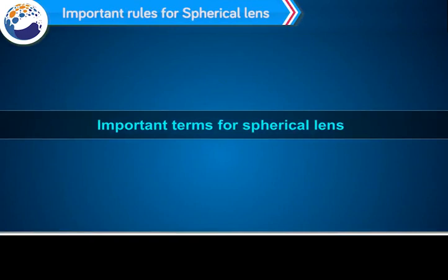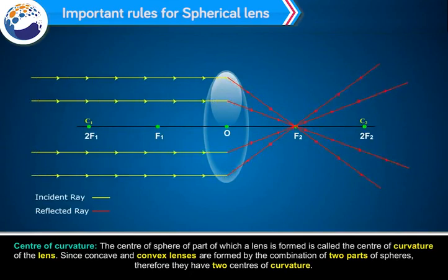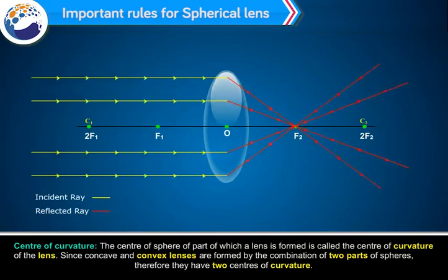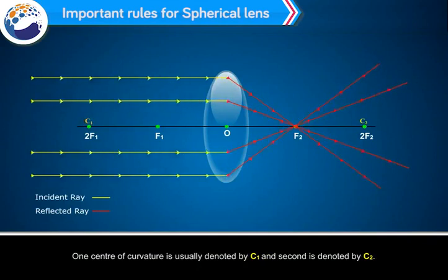Important terms for spherical lenses. The centre of the sphere, of which a part forms the lens, is called the centre of curvature of the lens. Since concave and convex lenses are formed by the combination of two parts of spheres, they have two centres of curvature. One centre of curvature is usually denoted by C1 and the second is denoted by C2.